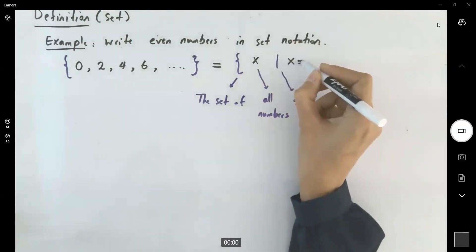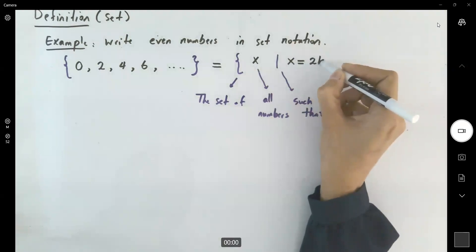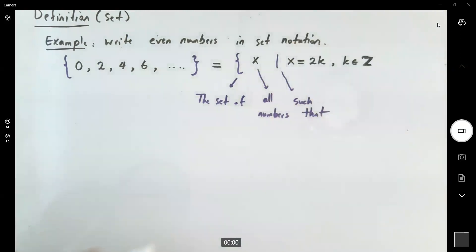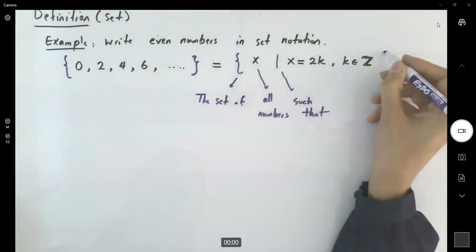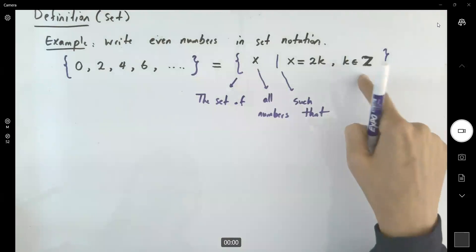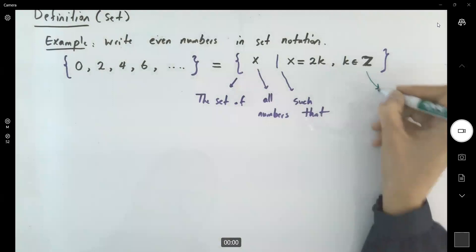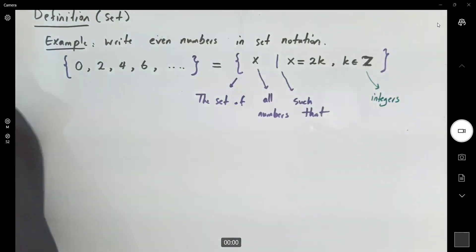Later on, we're going to represent this as 2K where K belongs to the integers. As you remember from algebra, Z is the set of integers. So that's the set representation for even numbers. Let us call it E, representing the even numbers.